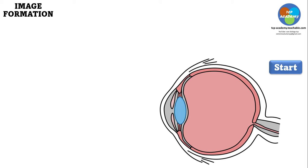The eyes are made up of a lens and cornea, among other parts. The light rays entering the eye are bent or refracted by the cornea and the lens, and as such, the image is inverted on the retina.